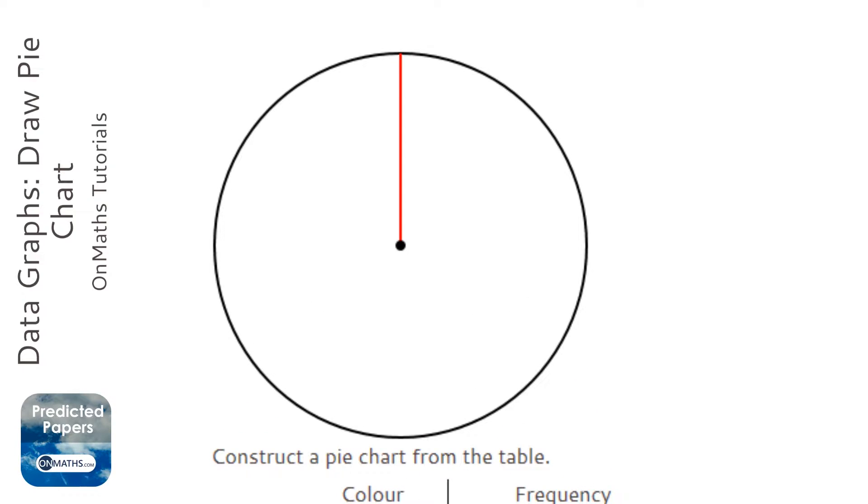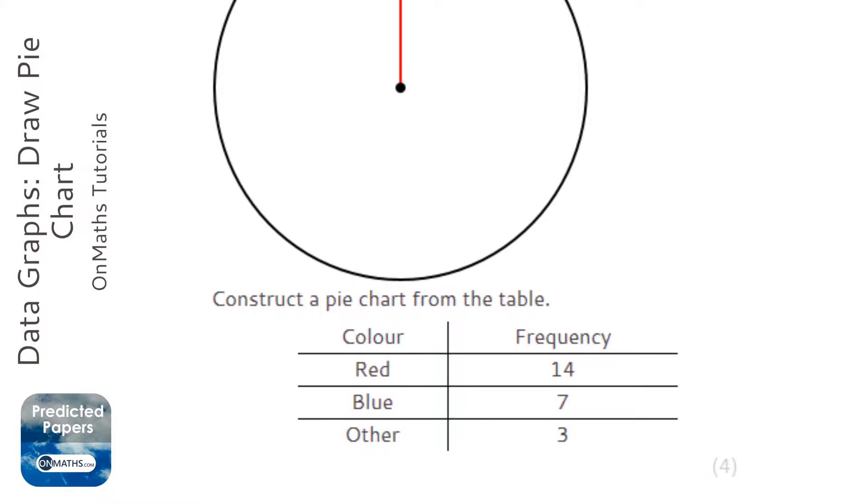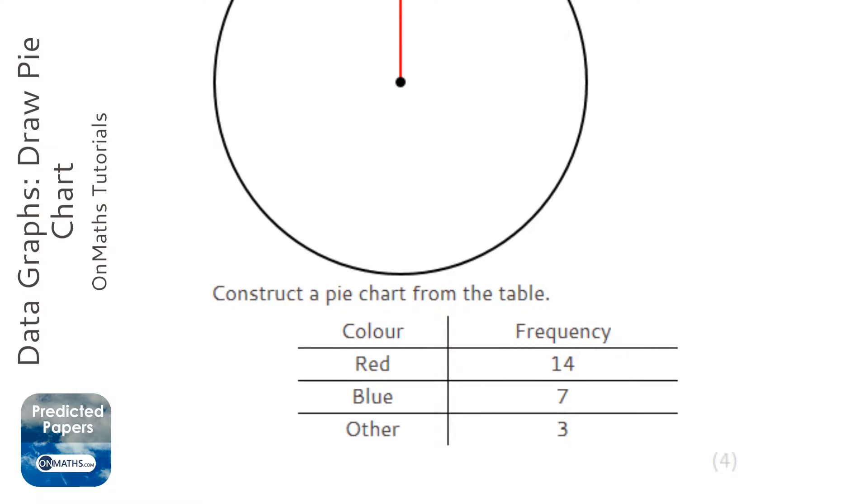OK, so for this question we are asked to construct a pie chart from the table. We've got a number of frequencies. Now the first thing to do is work out how many frequencies we've got in total.